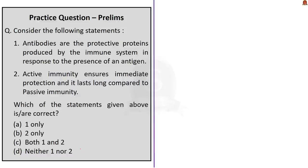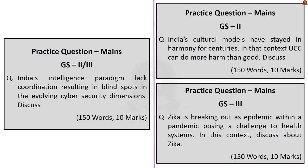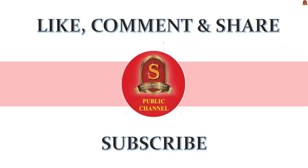Final question: Consider the following statements. First: antibodies are the protective proteins produced by the immune system in response to the presence of an antigen. Second: active immunity ensures immediate protection and lasts longer compared to passive immunity. Statement one is correct — as discussed, antibodies are protective proteins produced by the immune system in response to an antigen. Statement two is incorrect — passive immunity offers immediate protection, not active immunity; active immunity takes weeks to develop. The answer is Option A: only the first statement is correct. Main practice questions are displayed on screen — you can write your answers and post in the comment section. Thank you.